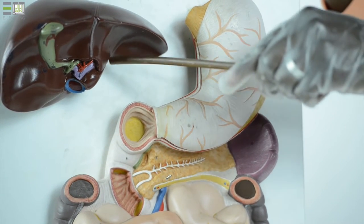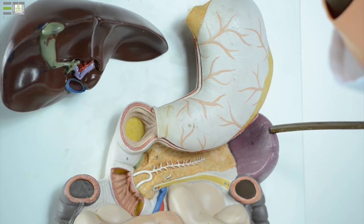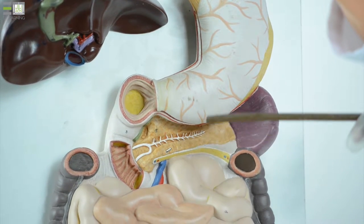Lesser omentum to the visceral surface of the liver, gastrosplenic ligament to the spleen, and by the greater omentum to the transverse colon.